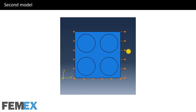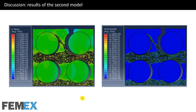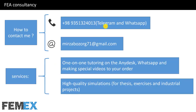This is the second model, which includes four fibers. This is the result of the first model — here you can see the debonding between fiber and matrix, and here we have an XFEM crack that is initiated and then propagated. This is the result of the second model — here you can see the debonding between fiber and matrix, and in these regions we have XFEM cracks.